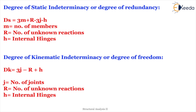Let's revise the formula. Degree of static indeterminacy, or degree of redundancy, for frames: DS is equal to 3m plus r minus 3j minus h. Where m is the number of members, r is the number of unknown reactions, h is the number of internal hinges, and j is the number of joints.